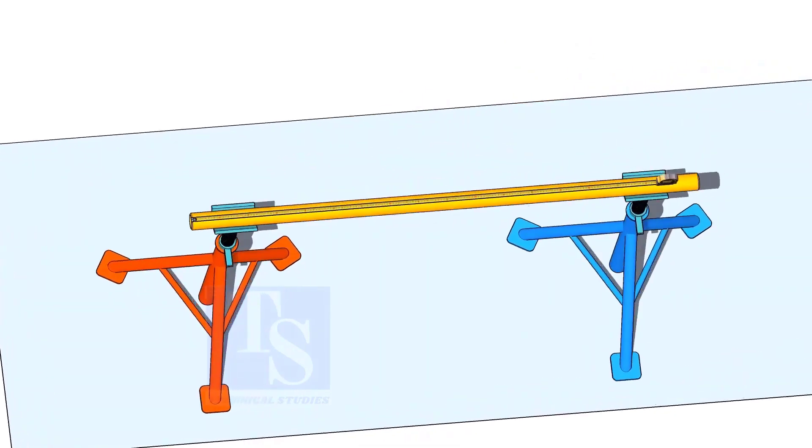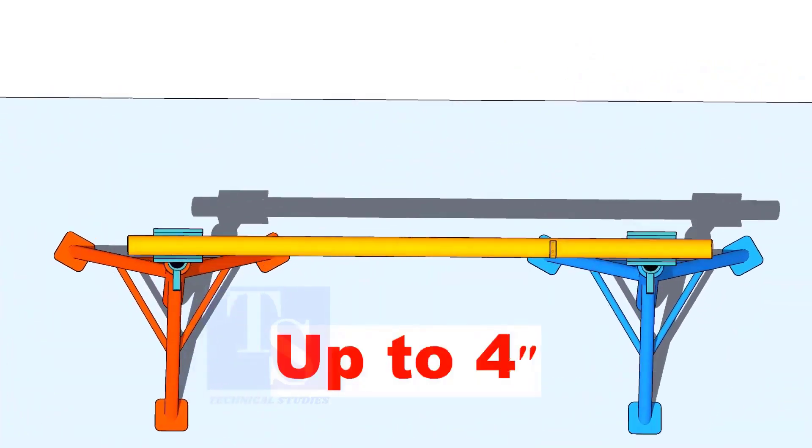For pipes, the diameter up to 4 inches, you can use a measuring tape to draw the circular line.